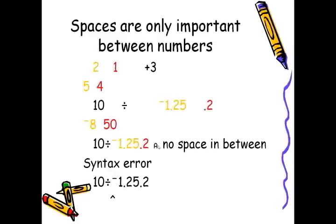Spacing is only important between the numbers. For example, if we don't put in a space between 2 and 1, it will be interpreted as 21. Same as in the example below. If we don't put in a space between minus 1.25 and 0.2, APL will have no idea what number we're talking about and will issue a syntax error to tell us that it doesn't know what we're trying to do here. And syntactically, it doesn't make any sense.